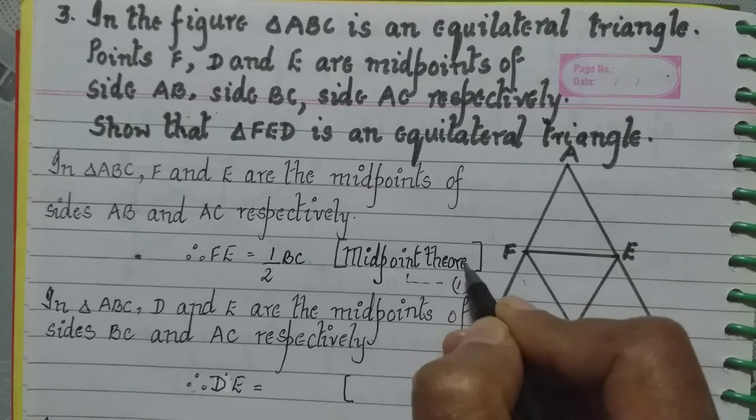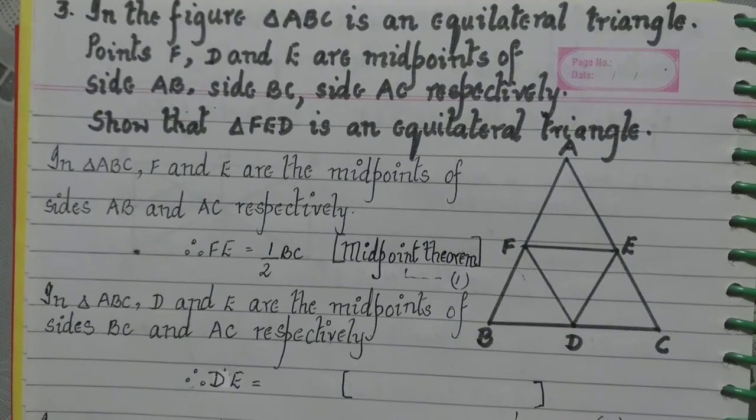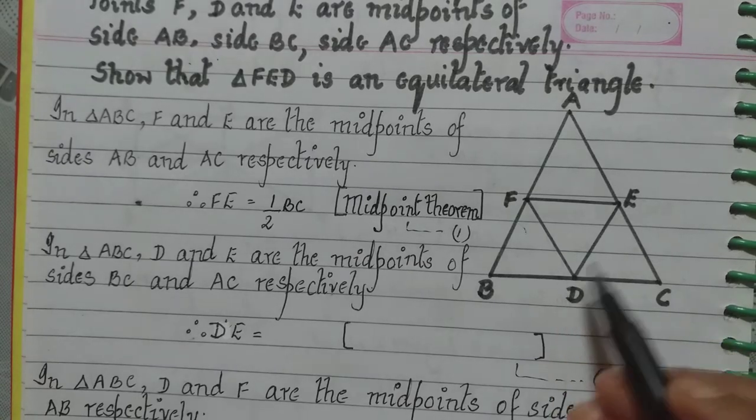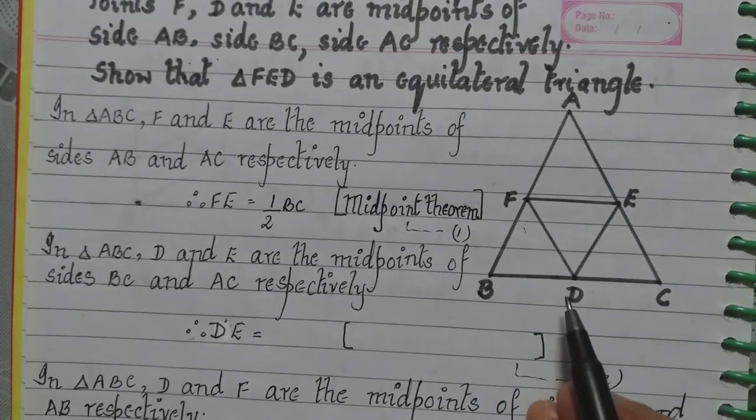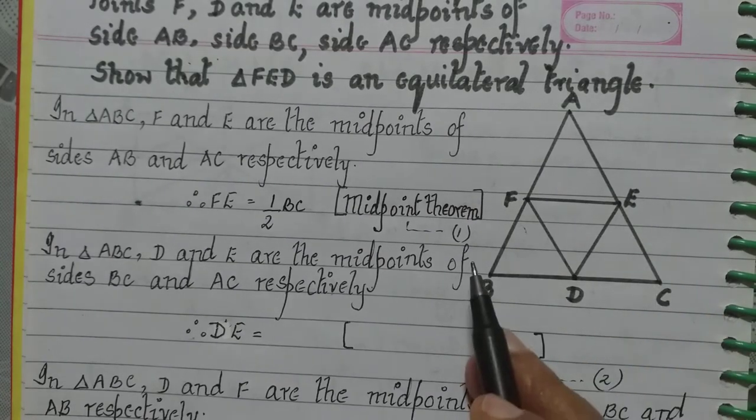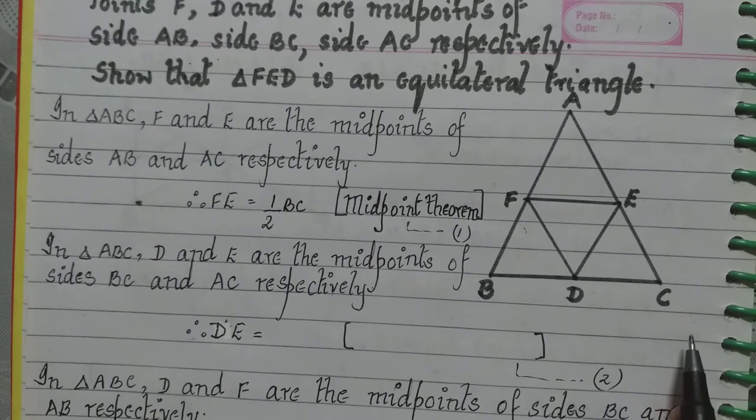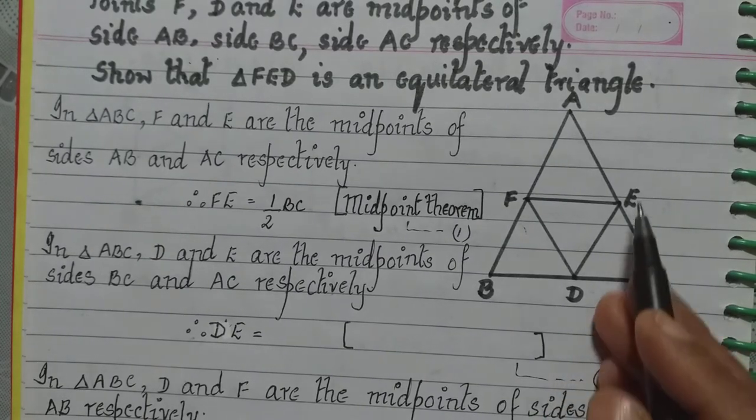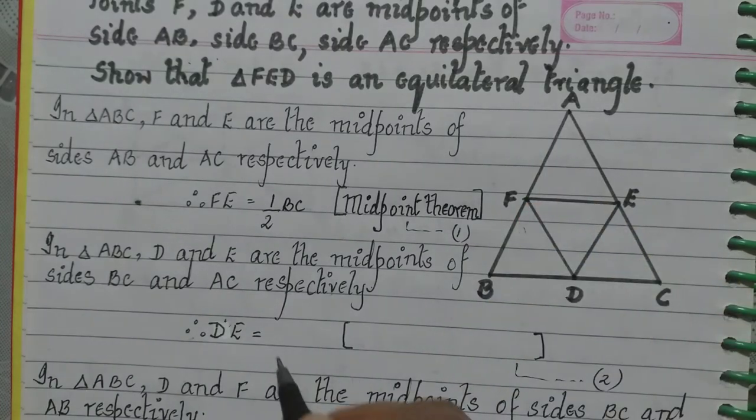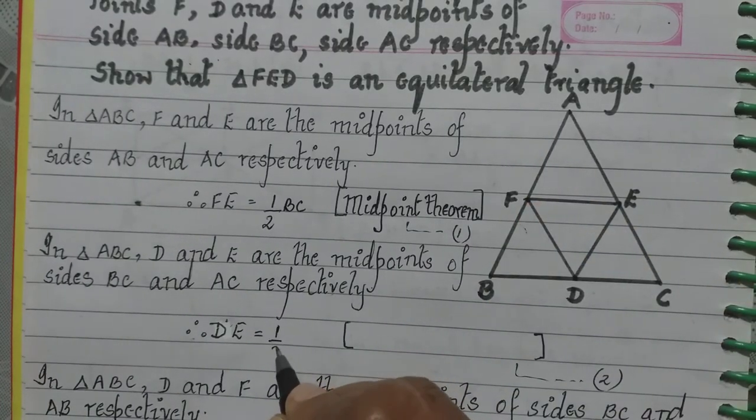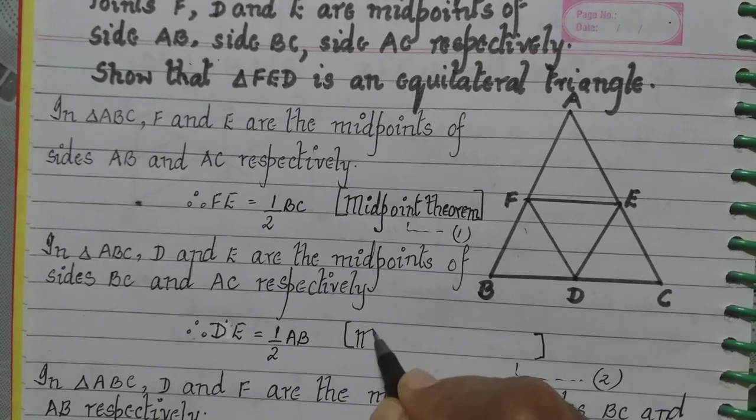Now I will do the same thing for all the three sides. What do I do now? Next I take these two points. In the triangle ABC, D and E are the midpoints of side BC and side AC respectively. Therefore, DE will be half the third side that is half of AB and write the reason midpoint theorem.